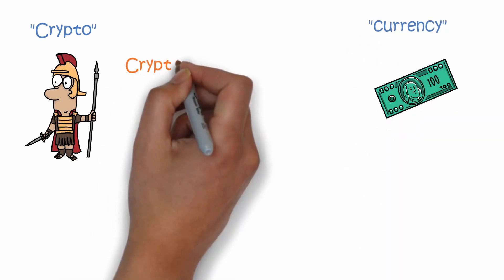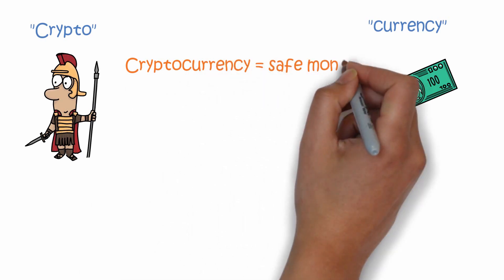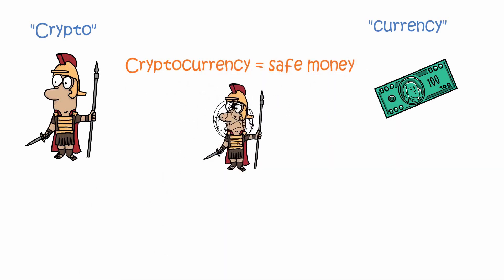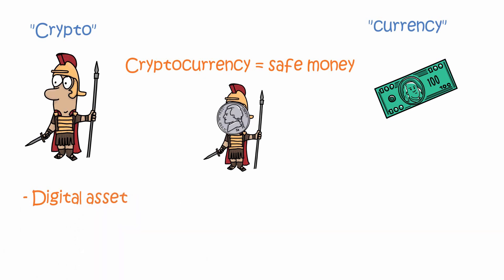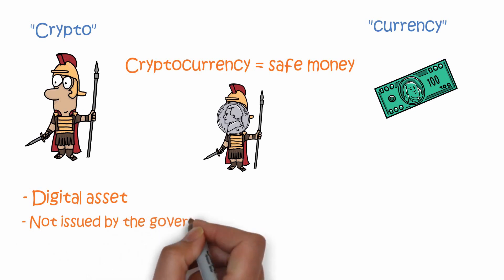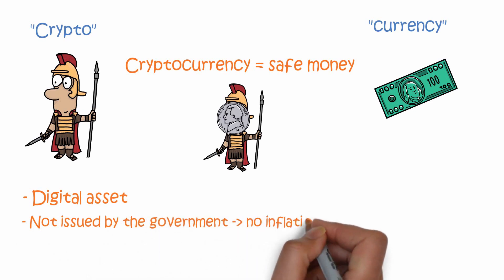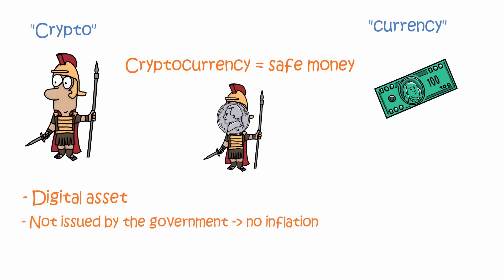As the crypto part of the name suggests, cryptocurrencies are very safe. Cryptocurrencies are a digital asset — there is no physical form. Unlike physical money, cryptocurrencies aren't issued by the government. This means that there is no inflation with cryptocurrencies, because governments can't print more money as they wish.